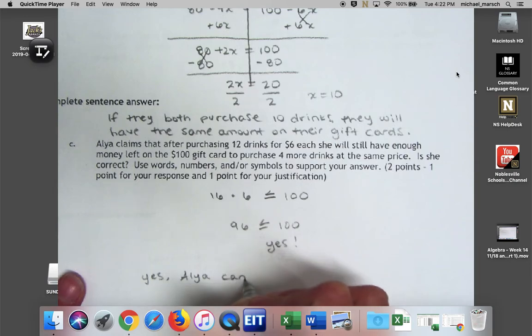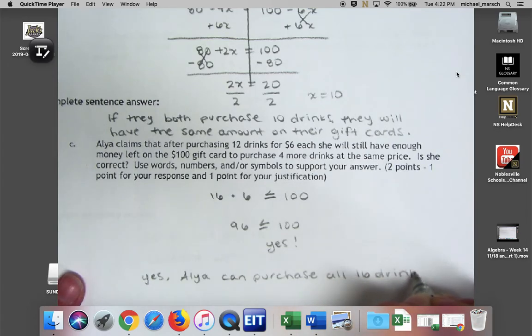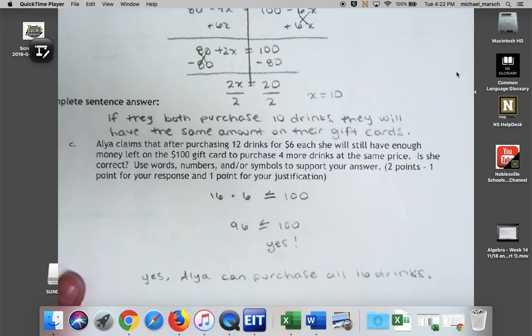Alia can purchase all sixteen drinks, hopefully not at the same time. Okay.